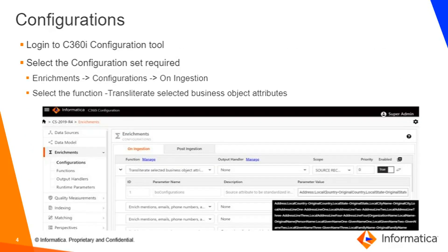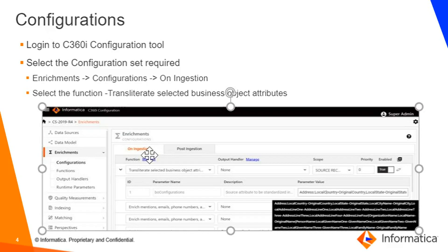Now we will see how to configure the same. We will log in to C360i's configuration tool. We will select which configuration set we need. We will move from the enrichments category to the configurations. And here we will click on ingestion. The first function will say 'transliterate selected business object attributes.' Here we will see all the parameters that are required.